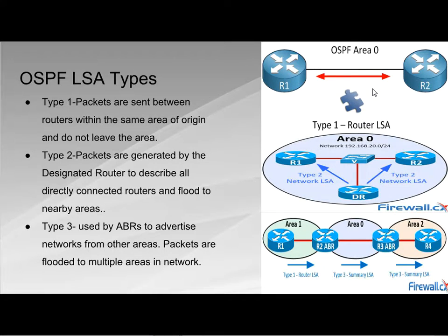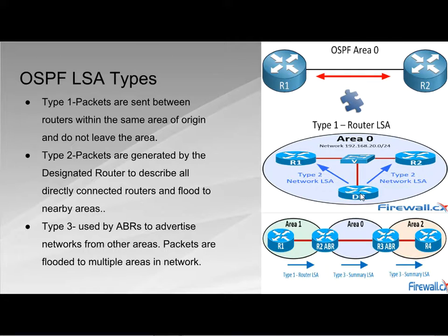In a type 2 link state advertisement, packets are generated by the designated router. As you can see from the diagram, packets are being sent to routers 1 and 2 from the designated router.